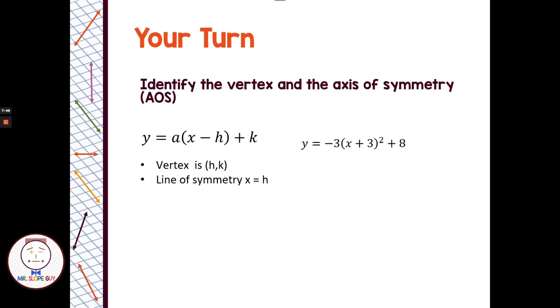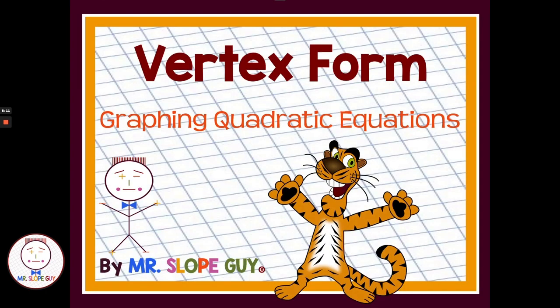Easy one to finish on — you guys try this one. Look at the quadratic in vertex form, identify the vertex, and identify the line of symmetry. Hopefully everybody got negative 3, 8, and our line of symmetry or axis of symmetry is x equals negative 3. I hope that helps you guys with graphing quadratics by using vertex form. Have a great day, thank you.